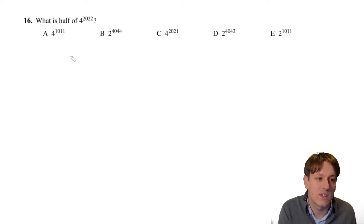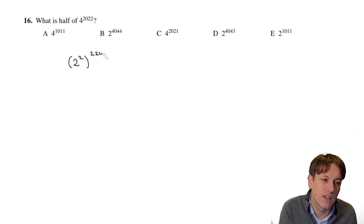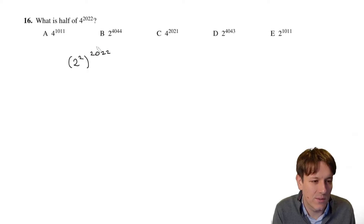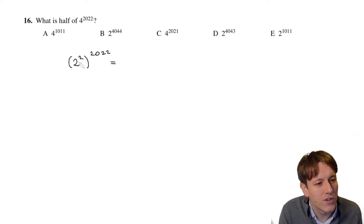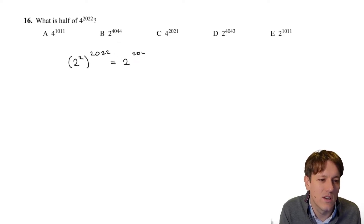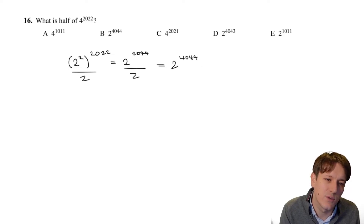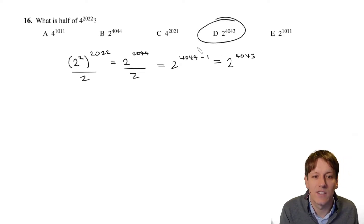We've got 4^2022. I would write 4 as 2², so we've got (2²)^2022. The rules of indices tell us that's 2^(2×2022) which is 2^4044. Now I want half of that, so if I divide by 2 I've got 2^(4044−1) which is 2^4043, and so the answer is D.